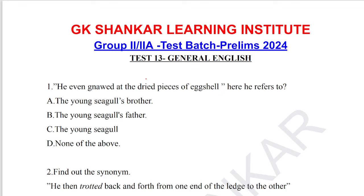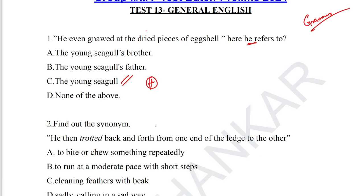We have questions about grammar. Straight away, question number 1. 'He even yelled at the tried pieces of eggshells.' Here 'he' refers to the young seagull from the story 'The First Flight.' So the answer for question number 1 is option C — the seagull.